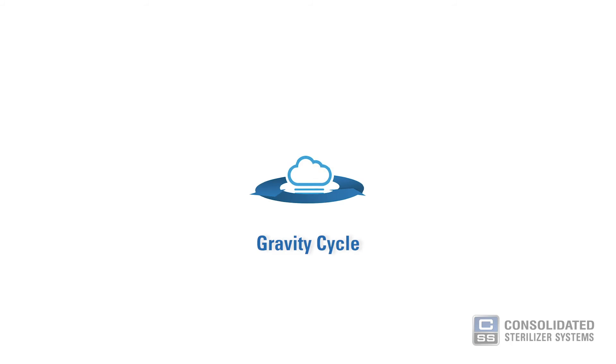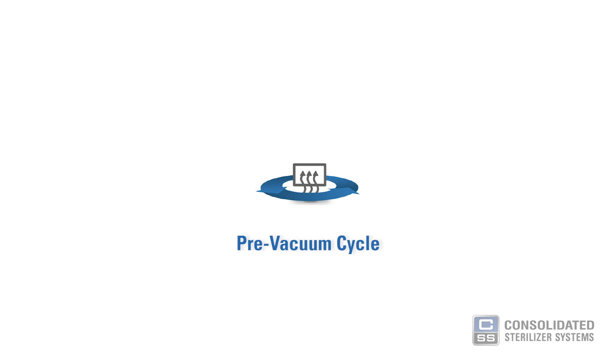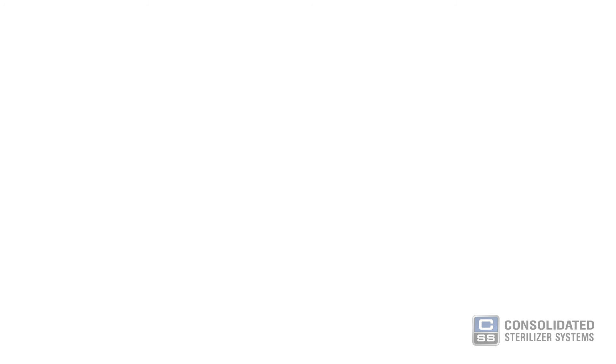Next up we'll talk about sterilization cycles. There are, in general, three standard and most popular sterilization cycles. A gravity cycle, which displaces air in the chamber by gravity. A pre-vacuum cycle, which mechanically removes air from the chamber using a series of vacuum and pressure pulses. And a liquid cycle, which is just a gravity cycle with a slower exhaust rate to minimize boil over.